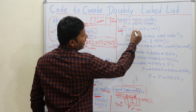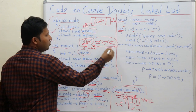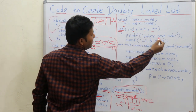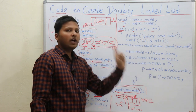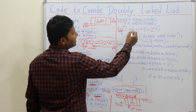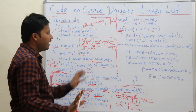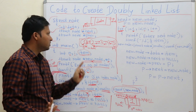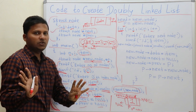Now the for loop: for i equal to 1, i less than n, i plus plus — so we go from 1 to n. We print 'enter next node' and take all the next nodes one by one. I am calling them as 0th node, 1st node, 2nd node, 3rd node, 4th node, and so on. For i equal to 1, the first node has the value 2, which is entered by the user.